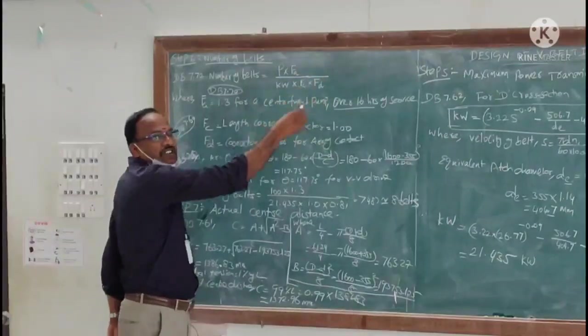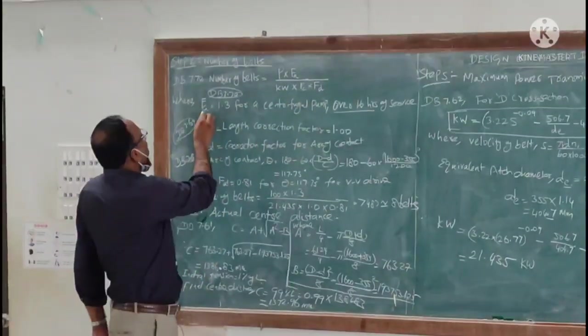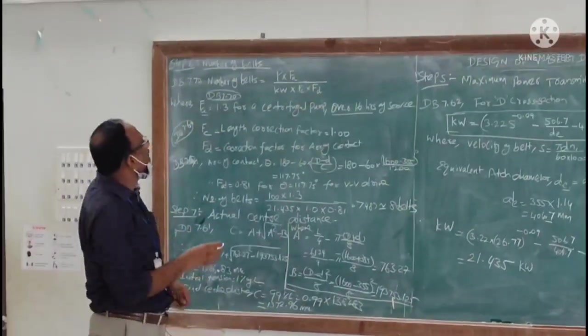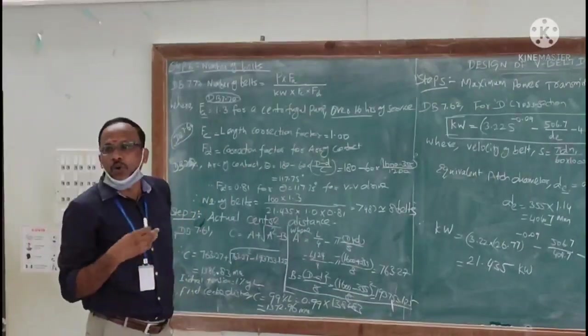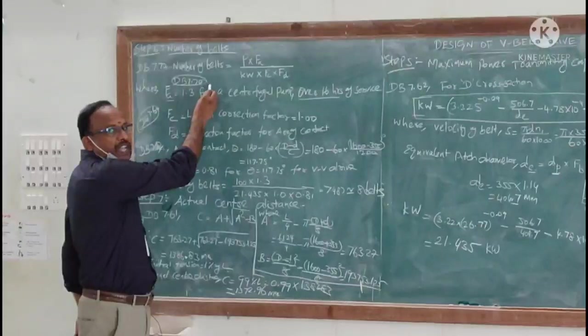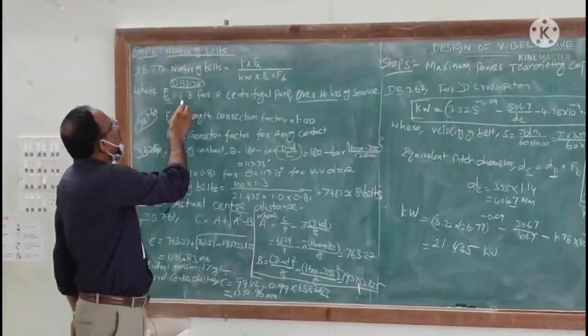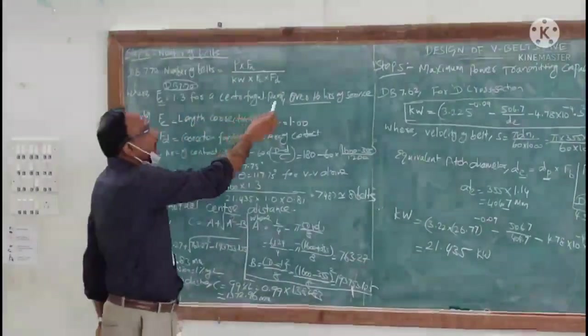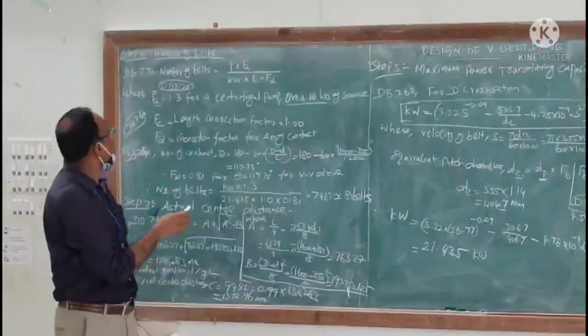Here we need to calculate these factor values, where F_a is nothing but the service factor or load correction factor. We can take from the data book 7.70 the value is 1.3 for centrifugal pump over 16 hours of service.